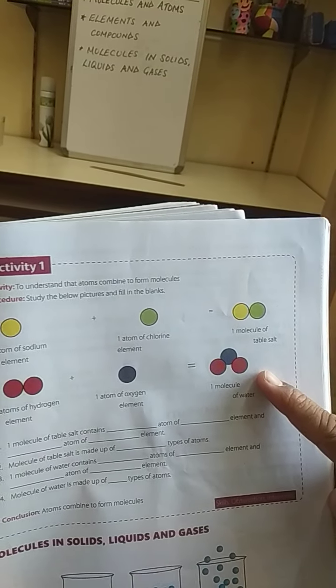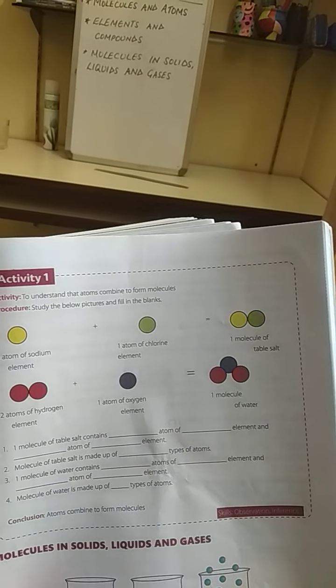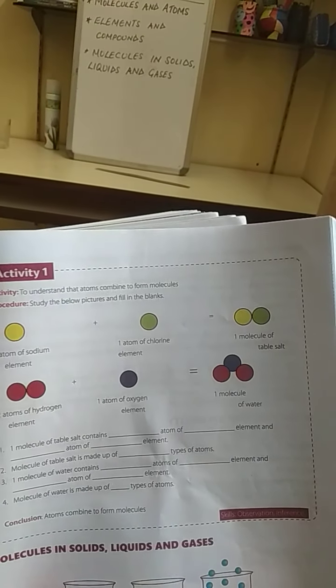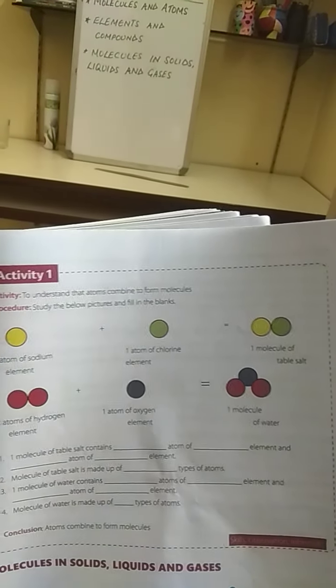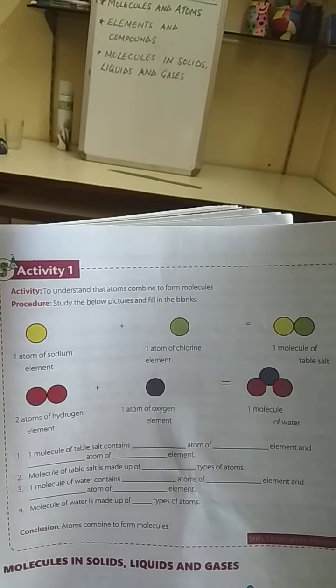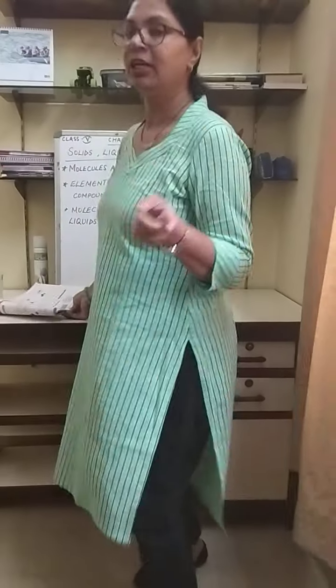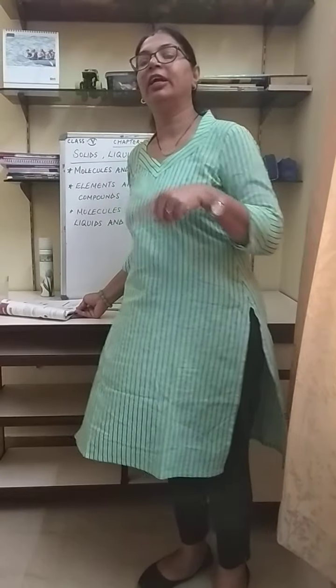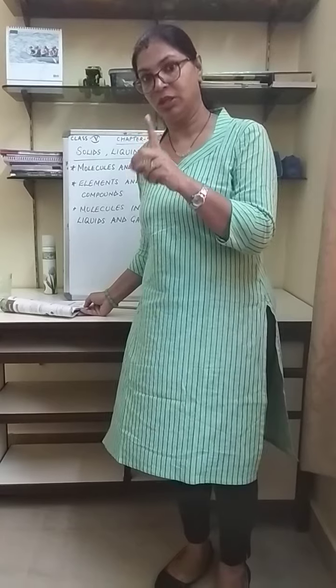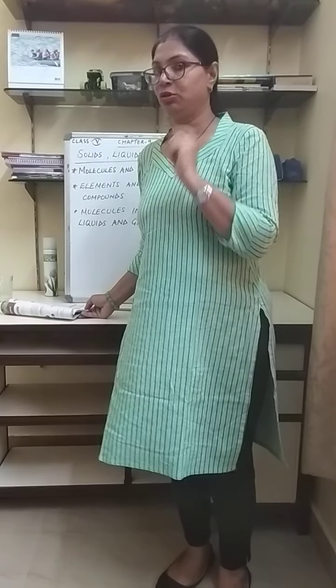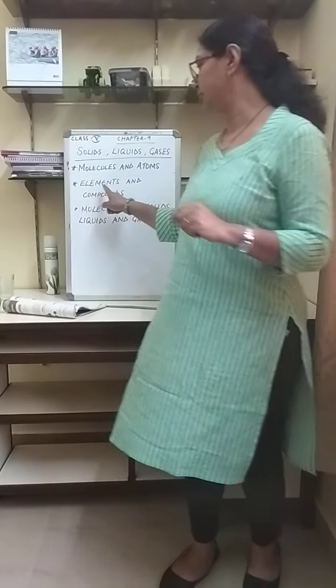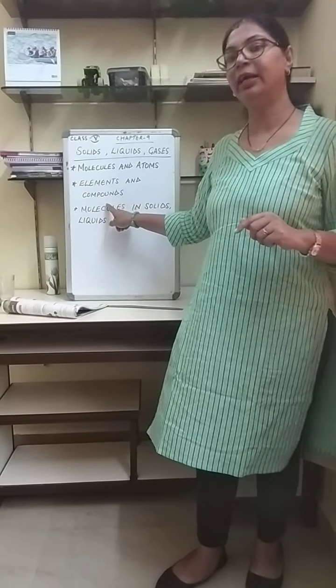Carbon dioxide is also a compound. There are many other things in nature which are called compounds. So it is clear that atoms combine to form molecules, same type of atoms form elements, and different types of atoms form compounds. You all must have understood the concept of elements and compounds.